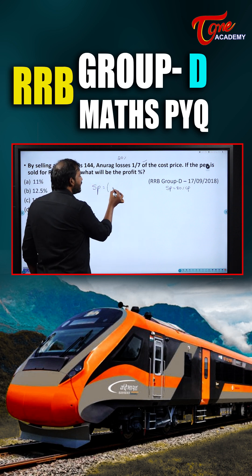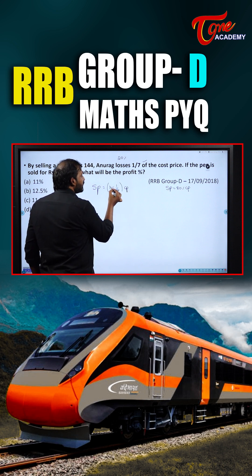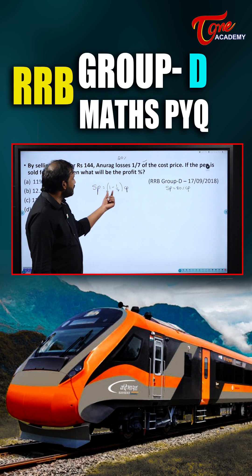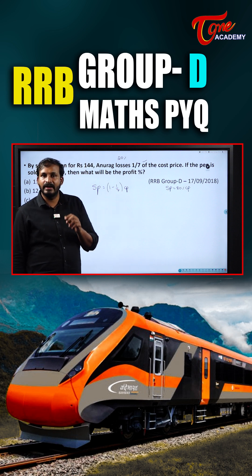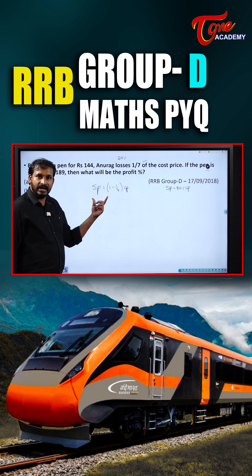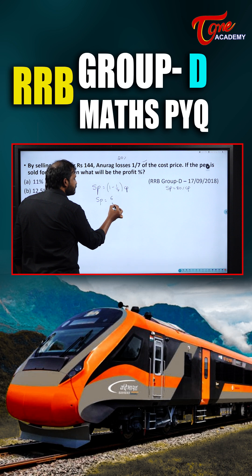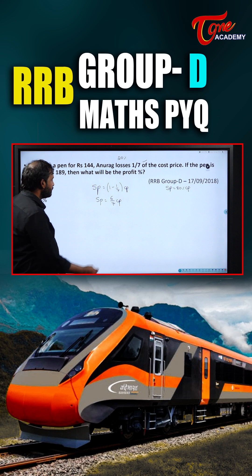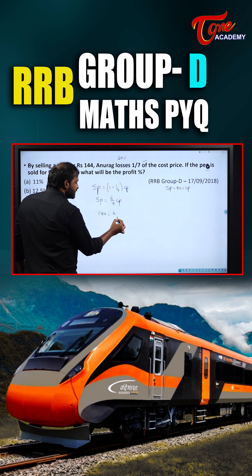So SP = (1 - 1/7) of CP. From one complete cost price he is losing 1/7th, so 1 minus 1/7. That means SP = 6/7 of CP. And the selling price is ₹144, so 144 = 6/7 × CP.